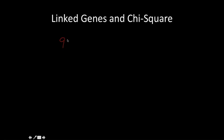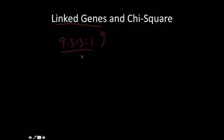The last thing: linked genes and chi-square. When you do a chi-square test and you're expecting a 9:3:3:1 ratio, but you find that the results don't meet this ratio, it may be that the genes are linked. If the chi-square says it's way off and not acceptable, it's probable that the genes are linked on the same chromosome. That would explain why you reject your null hypothesis and why the results don't come out to the expected 9:3:3:1 — or even a 3:1 ratio.